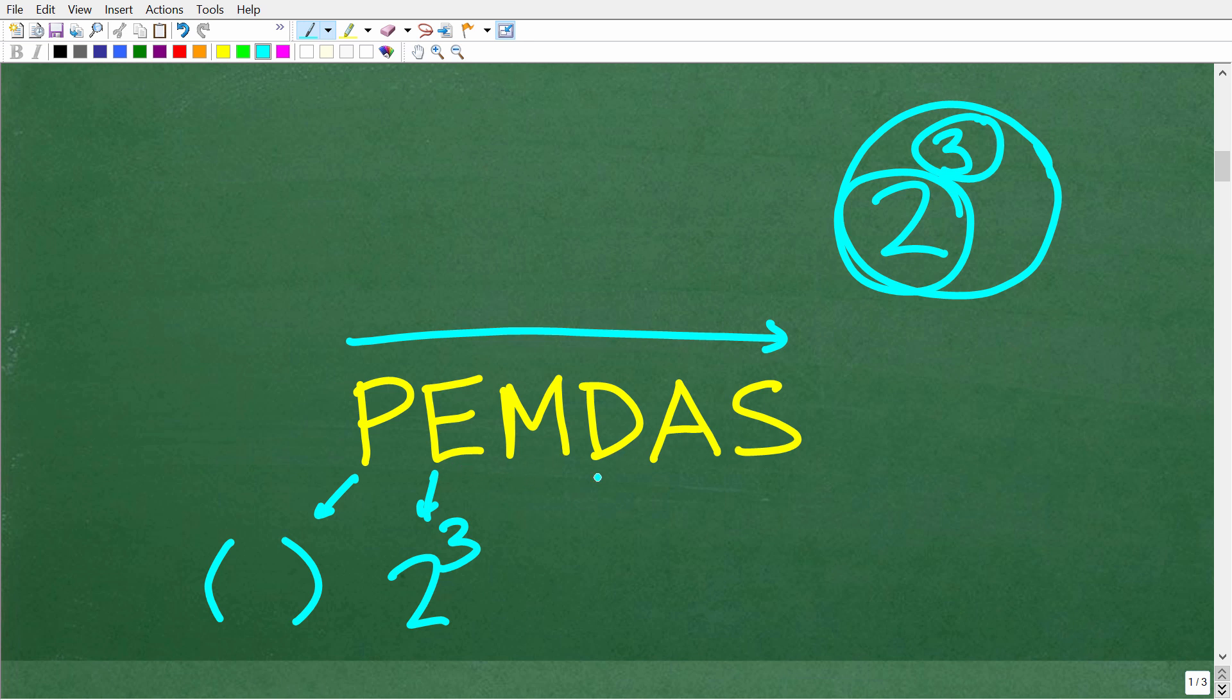M, D, A, S - let me tell you what these stand for. M stands for multiplication, D for division, A for addition, and S for subtraction. Many students are familiar with PEMDAS and think, okay, I do parentheses first, then exponents, then multiplication, then division, then addition, then subtraction left to right. That is not the way this works.